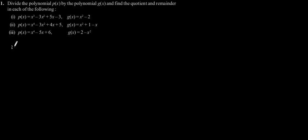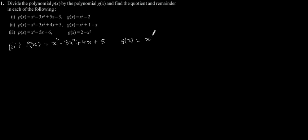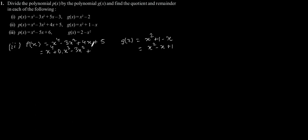The second one: P(x) is equal to x to the power 4 minus 3x squared plus 4x plus 5, and g(x) is equal to x squared minus x plus 1. Now let's divide.